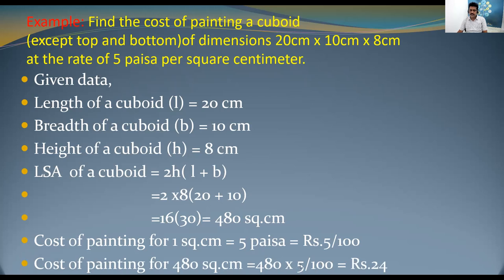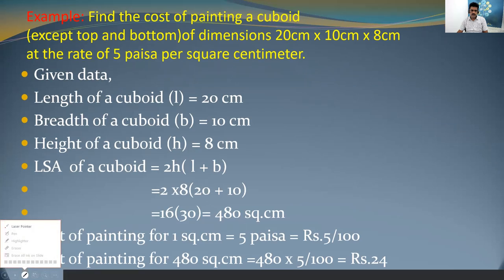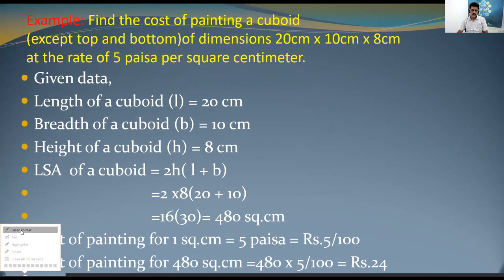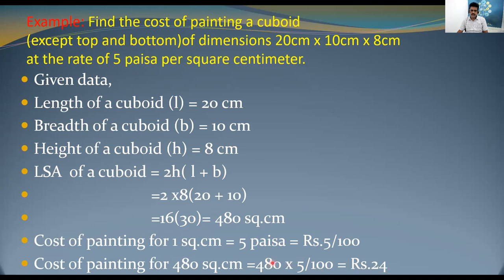After simplification, the cost of painting the cuboid except the top and bottom is rupees 24. This is how we solve problems involving lateral surface area combined with cost calculations.